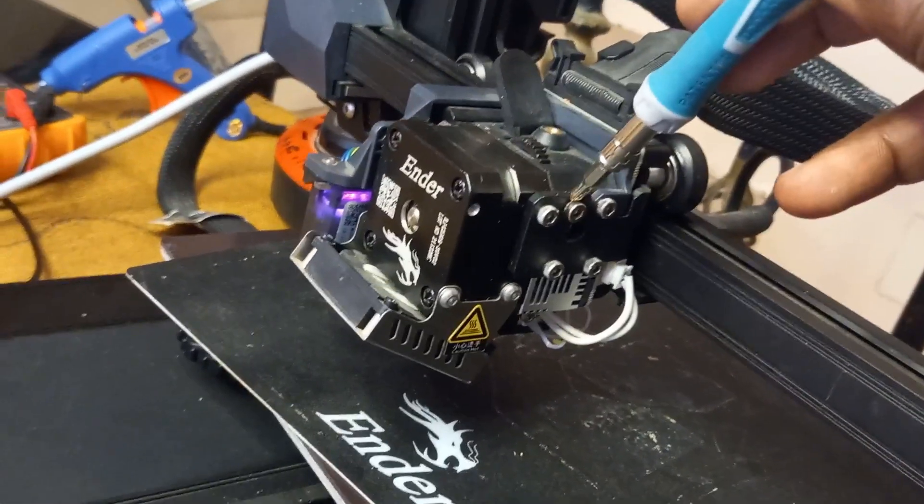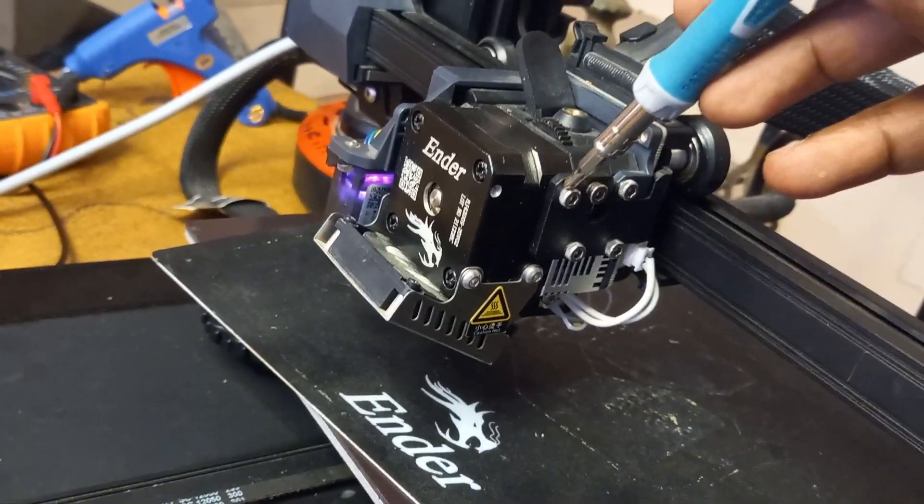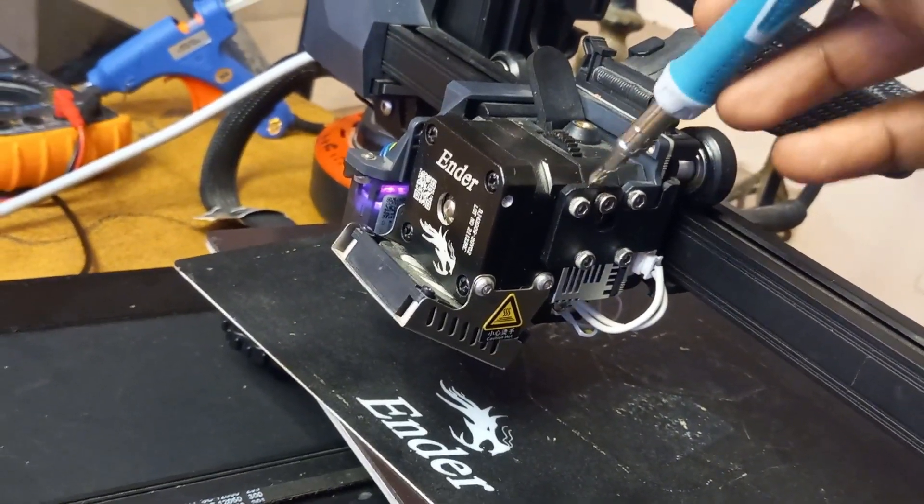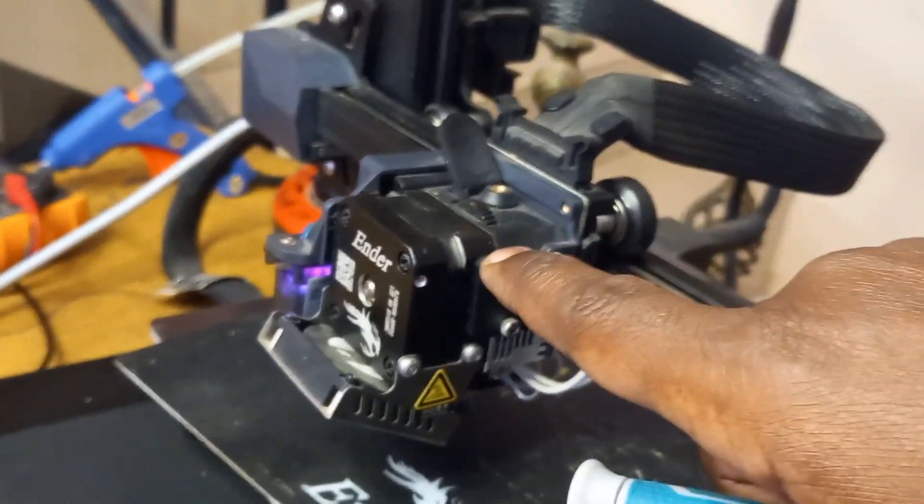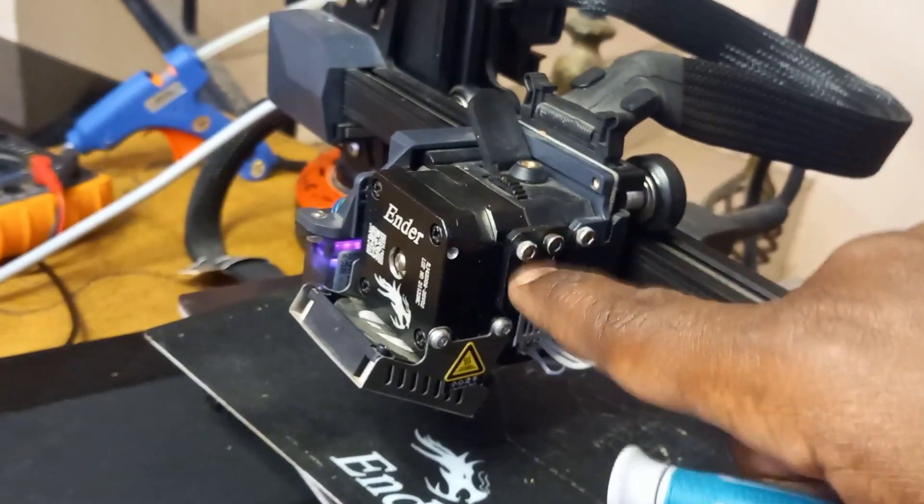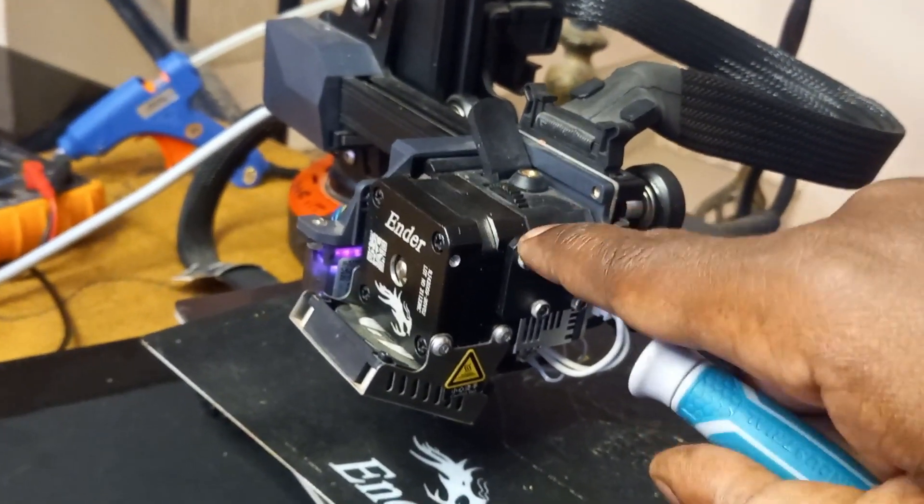You need to replace them. You can use M3 by 8 or M3 by 10, depending on the width of the mount. Here I have some M3 by 8. I can use them to mount it here. Now let's do that.